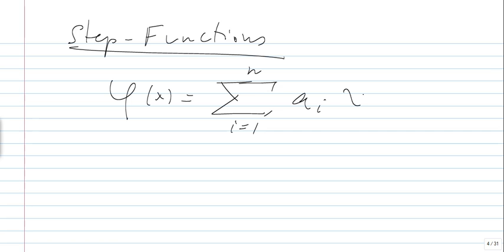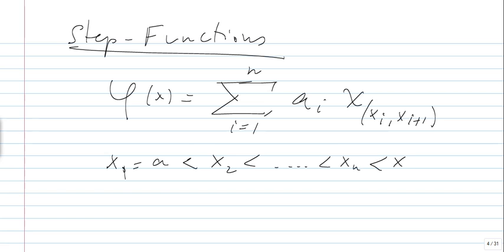In other words, what you have here is xᵢ, xᵢ₊₁, and x₀ = a < x₁ < x₂ < ... < xₙ < xₙ₊₁ = b. It doesn't matter what values φ takes at the xᵢ's — these are just a finite number of points, so we can work around that. What's happening exactly at the xᵢ's is not really an issue.